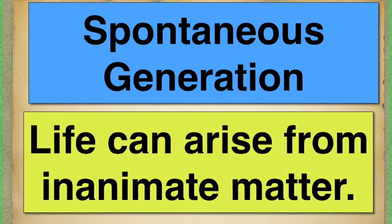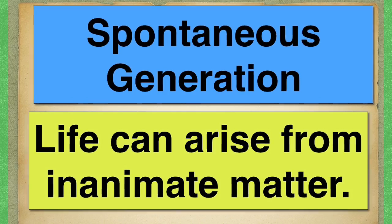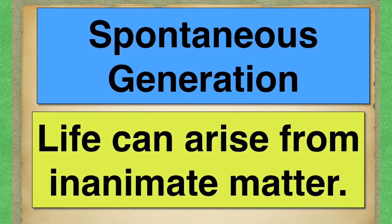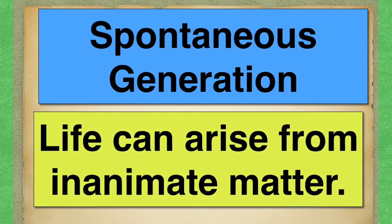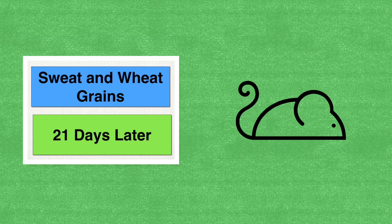For a very long time, scientists believed in spontaneous generation — that life could arise from inanimate objects, that crocodiles came from rotting logs, etc. A very famous scientist, Jean-Baptiste Van Helmont, actually wrote a recipe for the generation of mice: a sweaty shirt mixed in with some wheat grains in a container for 21 days.